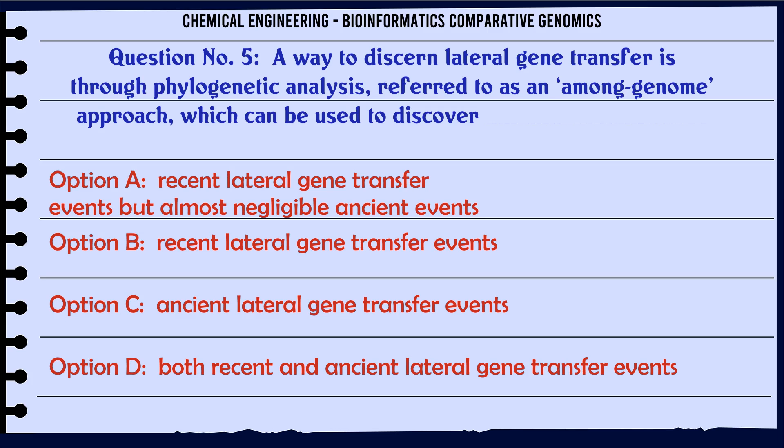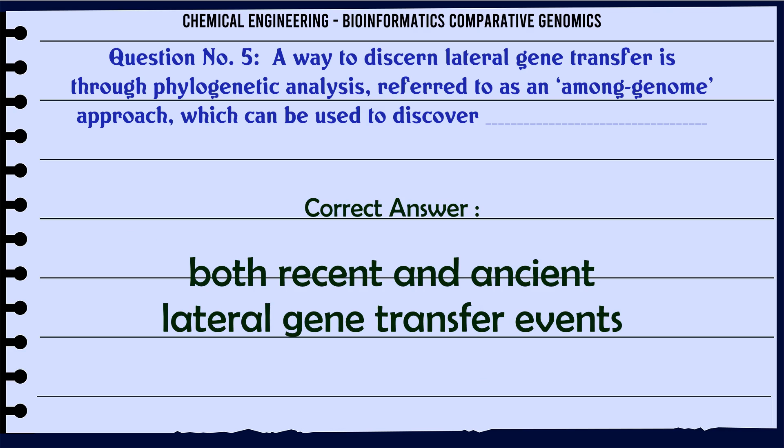A way to discern lateral gene transfer is through phylogenetic analysis, referred to as an among-genome approach, which can be used to discover: a. Recent lateral gene transfer events but almost negligible ancient events. b. Recent lateral gene transfer events. c. Ancient lateral gene transfer events. d. Both recent and ancient lateral gene transfer events. The correct answer is: both recent and ancient lateral gene transfer events.